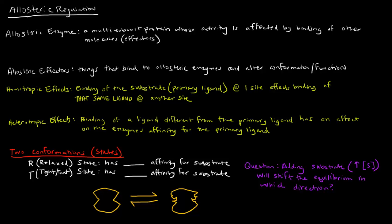In this video, I want to talk about allosteric regulation — it's a very important form of enzyme regulation, so it's something that we should definitely understand. Allosteric regulation literally means 'other shape': allo means other, and steric means shape. We'll see how that can help us remember what allosteric enzymes are and what allosteric regulation is.